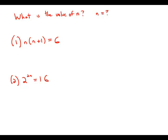Statement number one tells us that n times n plus one equals six. So when we multiply n times n plus one, we'll get an n squared, which means we're dealing with a type of equation known as a quadratic.